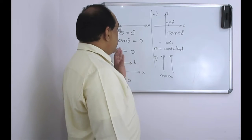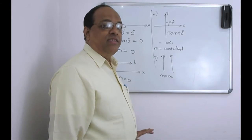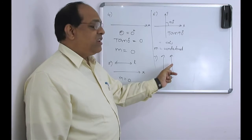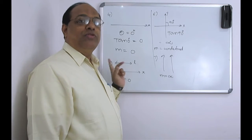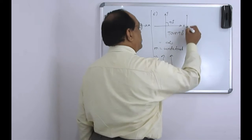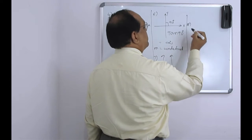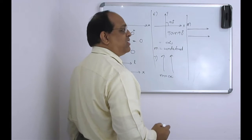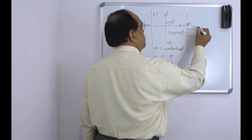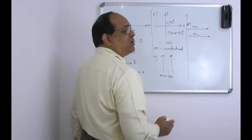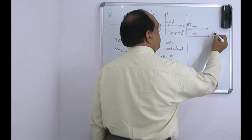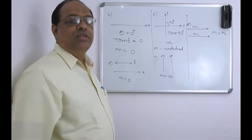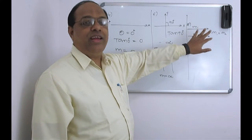From this understanding, if two lines are parallel to each other, then their slopes are the same. So if we consider the slopes as m1 and m2, then m1 should be equal to m2. This is about parallel lines.